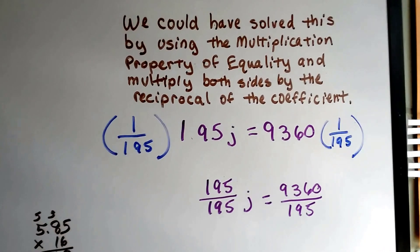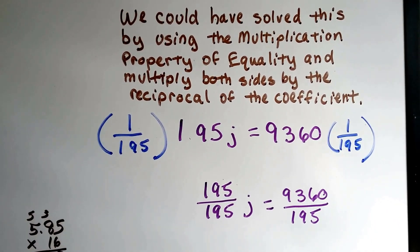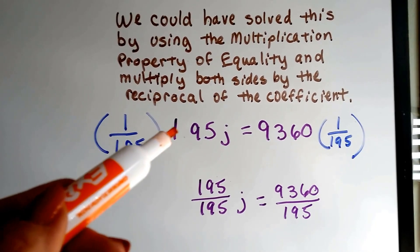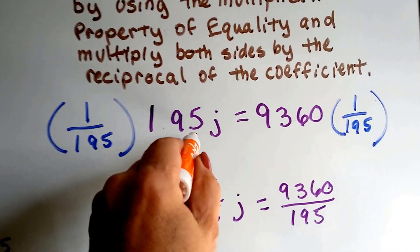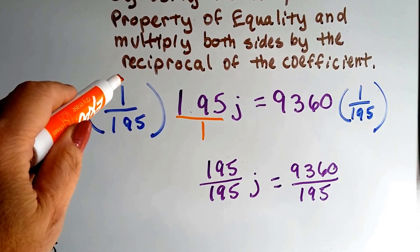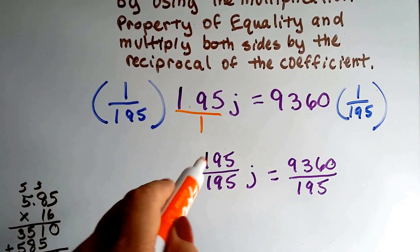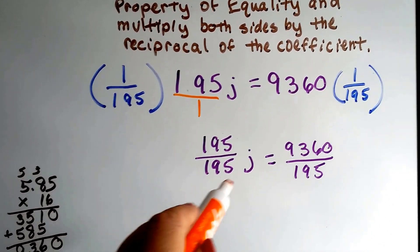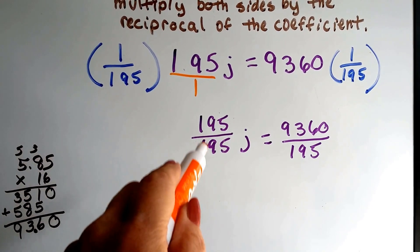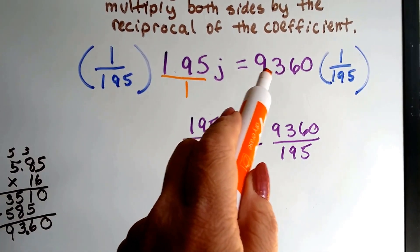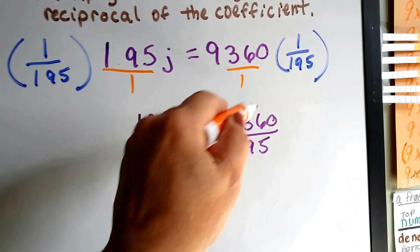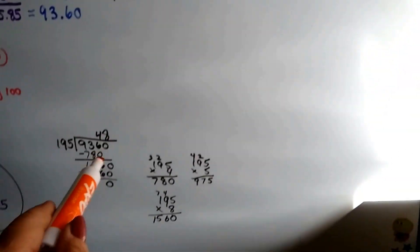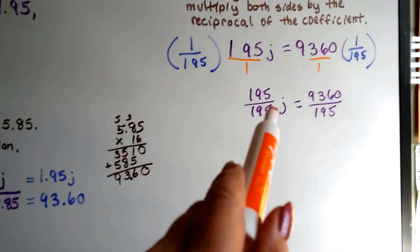Now we could have solved this by using the multiplication property of equality and multiplying both sides by the reciprocal of the coefficient, 195. And after we got rid of the decimals on each side by multiplying by 100 on each side, we would be able to do the reciprocal of this 195 as 1 over 195. See? We flip it around. So we now have 195 over 195 j. This cancels out as just the j. And when we do the 9360 over, it would be over 195. We could still do the same division and get our 48 and know that j equals 48.